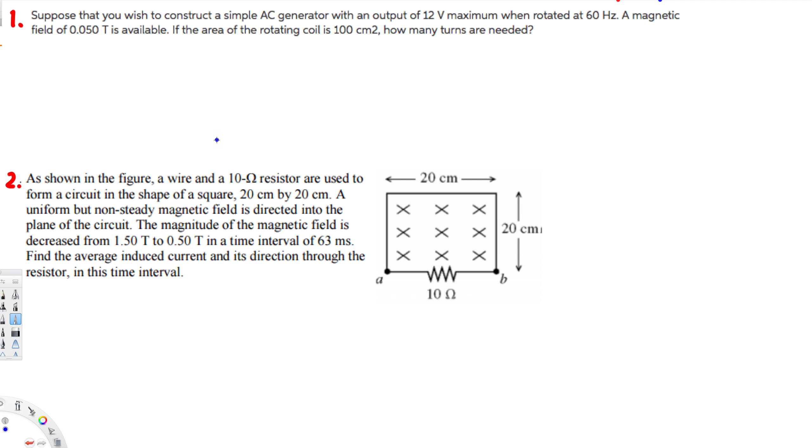Now to find this one, we can use this equation: EMF maximum is equivalent to N A B Omega. The question is asking for how many turns, so we are looking for N. If we rearrange this equation, this is going to be EMF maximum over A B Omega.